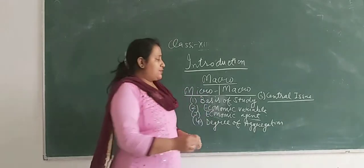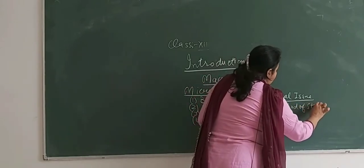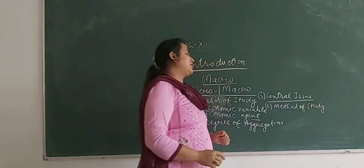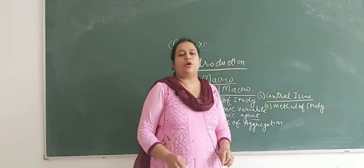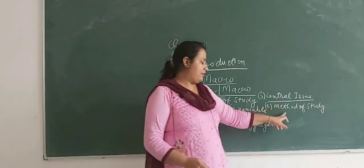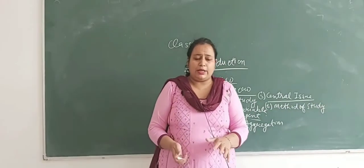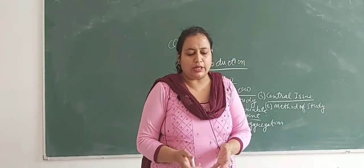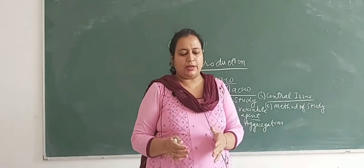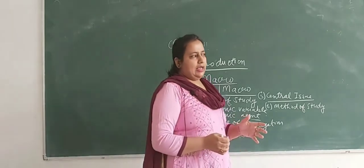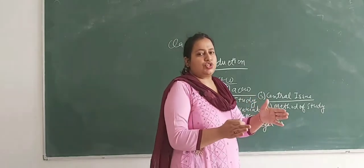The sixth point is the method of study. In microeconomics, the method is partial equilibrium — meaning there is no change in other markets like the labor market or capital market. In macroeconomics, the method is general equilibrium, which refers to simultaneous equilibrium in all markets, meaning all markets change together.